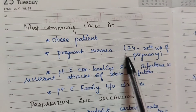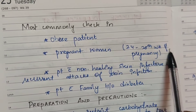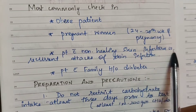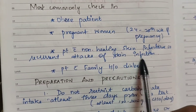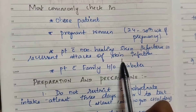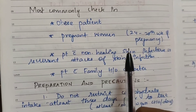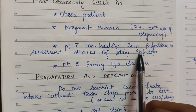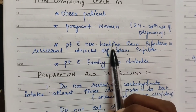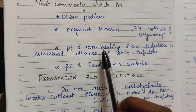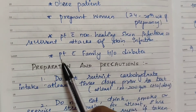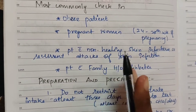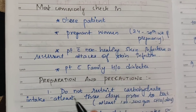GTT is indicated in the 38th week of pregnancy, in patients with non-healing or recurrent skin infections, and in patients with a family history of diabetes. In those cases, blood glucose levels should be tested.